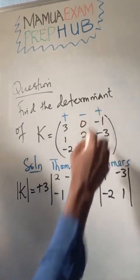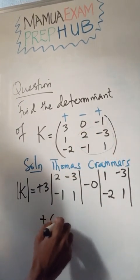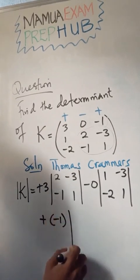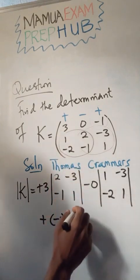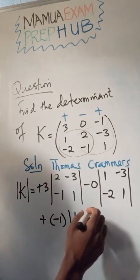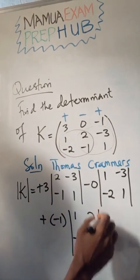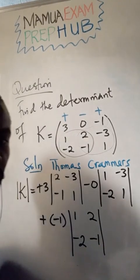Lastly we have plus minus 1, so plus minus 1. What I'm going to be using is this part: 1 minus 2, 2 minus 1. So that is our first step.